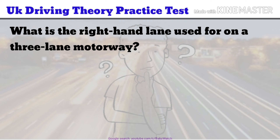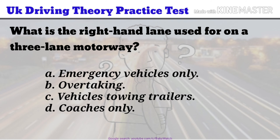UK Driving Theory Practice Test Question 8 of 50. What is the right-hand lane used for on a three-lane motorway? a. Emergency vehicles only. b. Overtaking. c. Vehicles towing trailers. d. Coaches only. The correct answer is b.